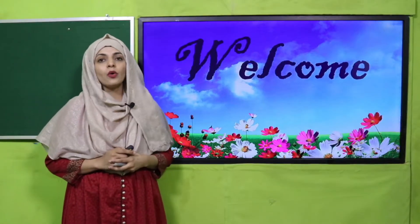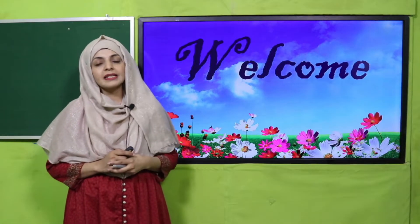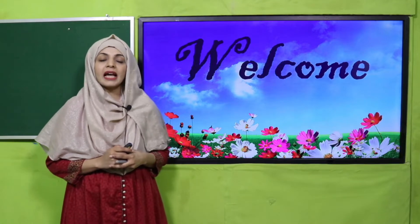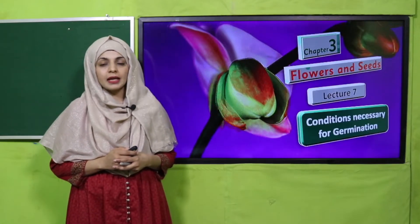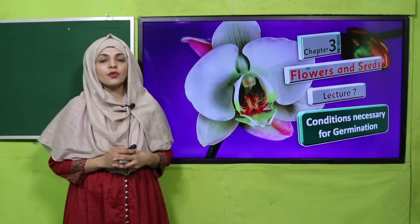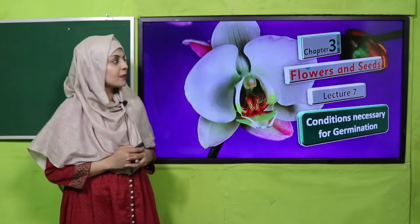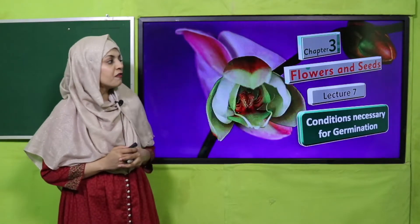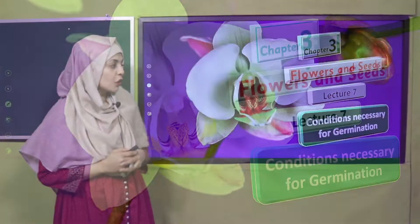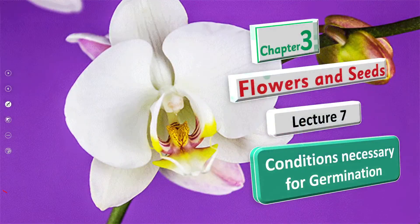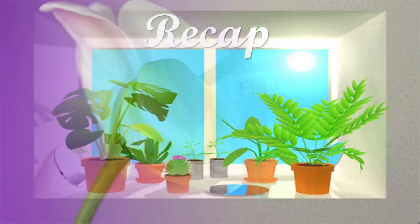Bismillahirrahmanirrahim. Assalamu alaikum! I hope you all are fine and staying safe and happy. I am your science teacher, Miss Farheen, and I welcome you all to your science class. We are on chapter number three: Flowers and Seeds, and today I will deliver its seventh lecture. This lecture includes conditions necessary for germination — the conditions necessary for germination is what we will discuss today.